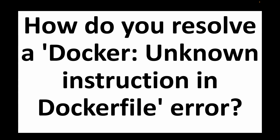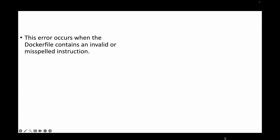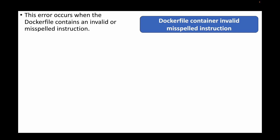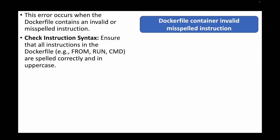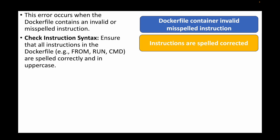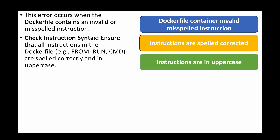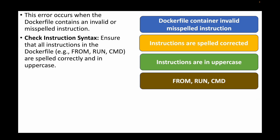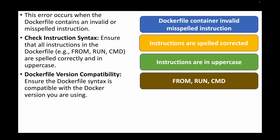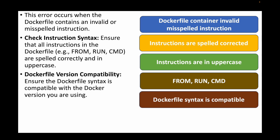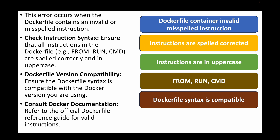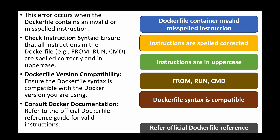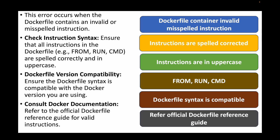The next question is: how to resolve the 'unknown instruction in Dockerfile' error? This occurs when the Dockerfile contains an invalid or misspelled instruction. Ensure all instructions are spelled correctly and written in uppercase — such as FROM, RUN, and CMD. Check that the Dockerfile syntax is compatible with the version of Docker you are using, and refer to the official Dockerfile reference guide to verify valid instructions and correct any typos.